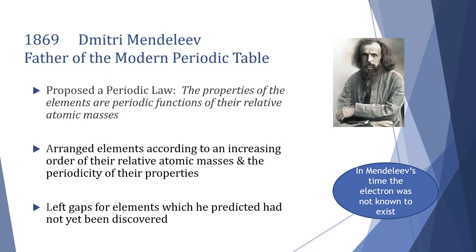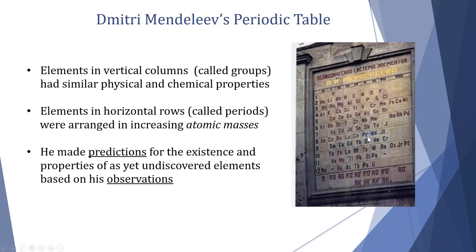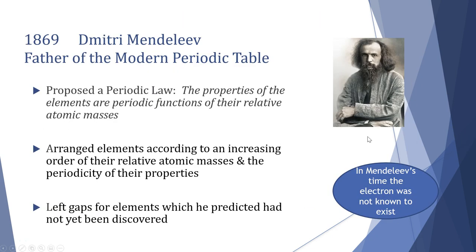So the Modern Periodic Table as we know it was largely put together by Dmitry Mendeleev, this lovely crazy looking guy over here. He proposed the Periodic Law - the idea that the properties of the elements are periodic functions of their relative atomic masses, meaning they repeat over and over again in a regular pattern that is relative to their atomic masses.